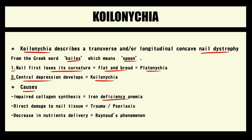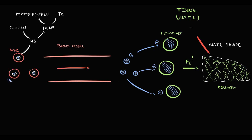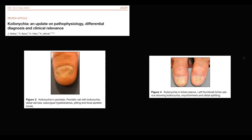The second cause of koilonychia is direct injury to nails, in cases of trauma or psoriasis. In trauma or in psoriasis, nails become severely damaged, and with loss of nail tissue, nails become flat and thin — and exactly this condition we call koilonychia. On these images we can see koilonychia in patients with psoriasis and lichen planus.